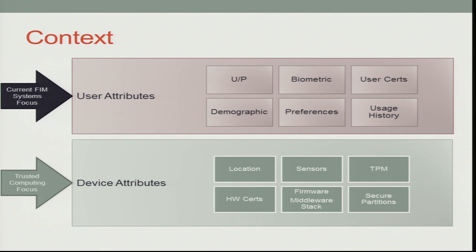To the basics: typically people talk about user attributes — username and password, 99% of the time. Then more interesting ones include biometrics, which are very hardware-dependent and have a huge problem of interoperability. There are also PKI assertions, demographic information, preferences, usage history, and reputation — things like where you've been, which are becoming a big part of social media.